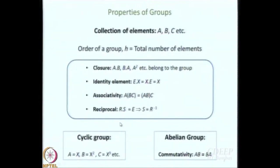What is a cyclic group? A cyclic group is like this: let us say element A is x, then B is x squared, C is x cubed and so on and so forth. We are going to look at an example of an actual cyclic group a little later today.